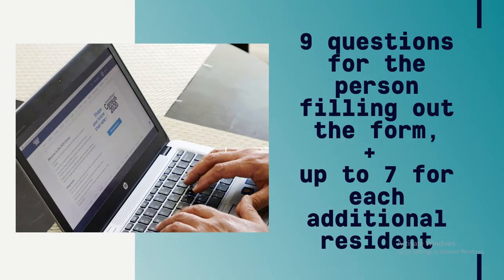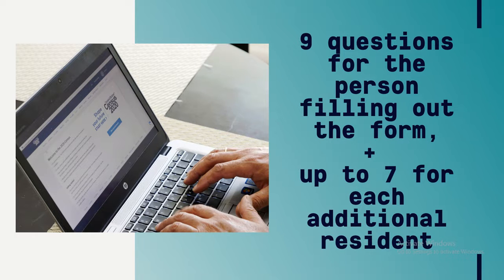The census questionnaire is brief and should only take about five to ten minutes. There are nine questions for the person filling out the form and up to seven questions for each additional household resident. Questions include information about the age, sex, and race of each resident. There are absolutely no citizenship questions on the census and all of your answers are strictly confidential.